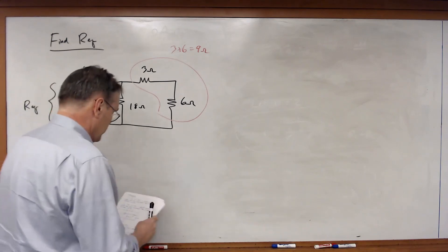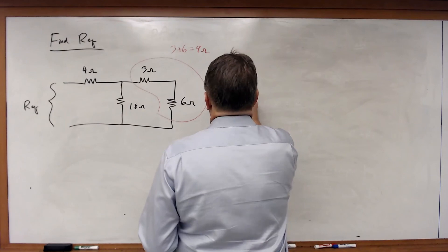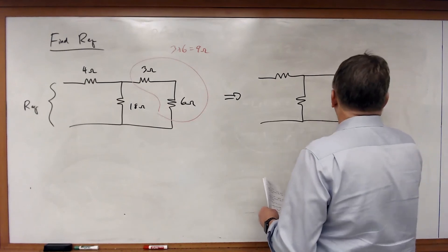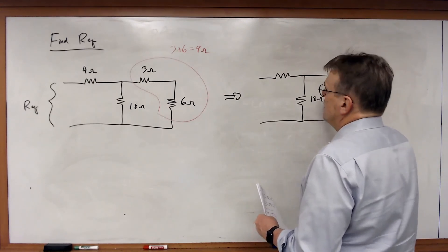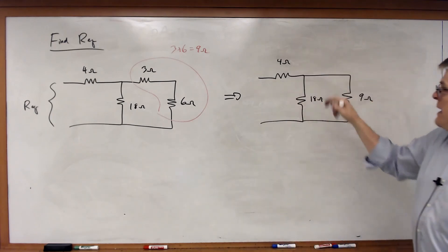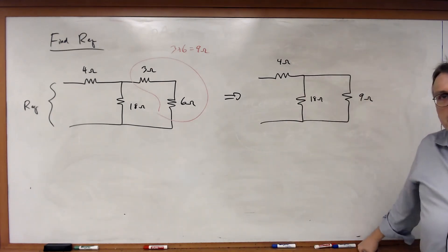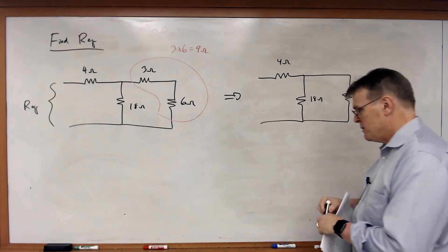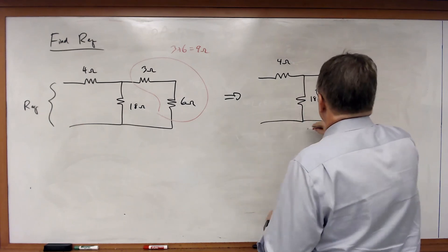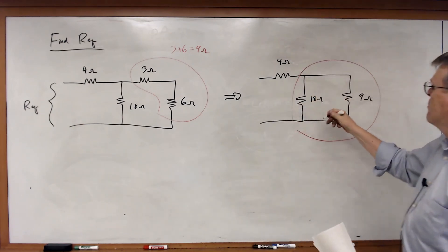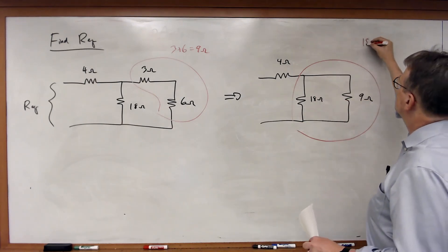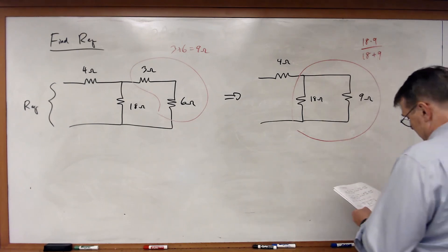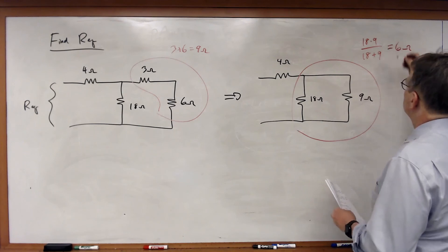The redrawn network now has 9 ohms, 18 ohms, and 4 ohms. Looking at this, the 9-ohm and 18-ohm resistors are now in parallel. Using product over sum: 18 times 9 divided by 18 plus 9 equals 162 divided by 27, which equals 6 ohms. We replace those two with a single 6-ohm resistor.